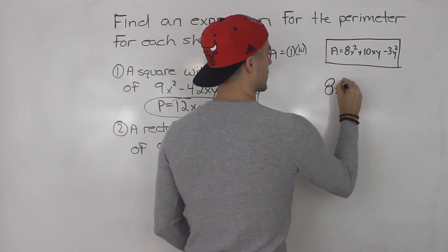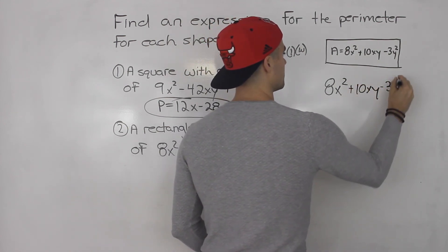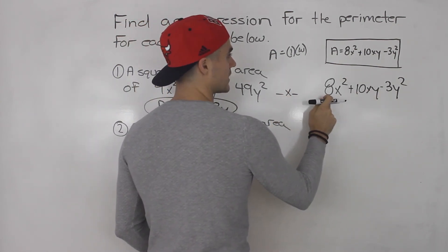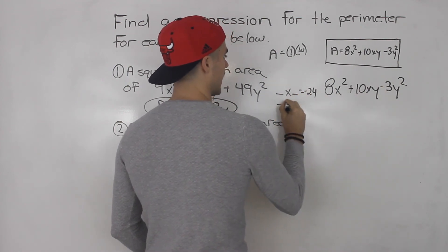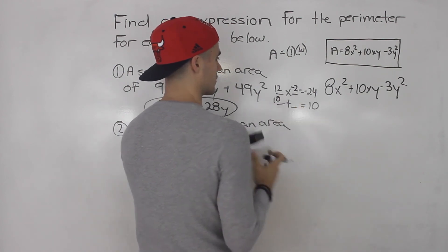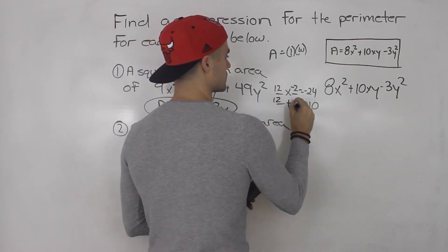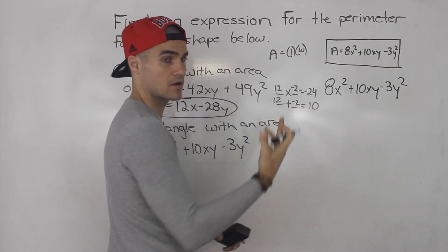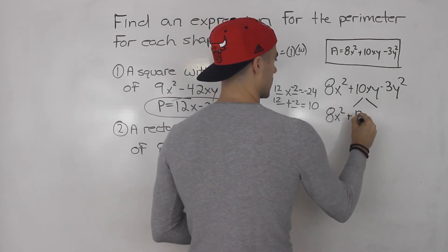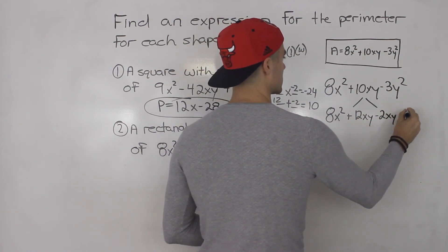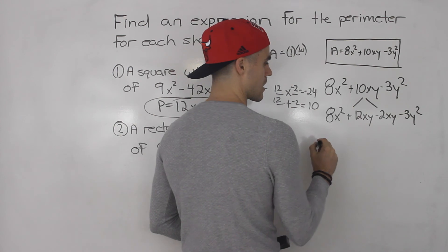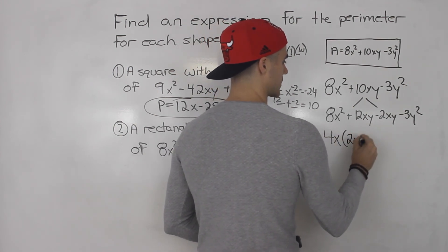Taking 8x squared plus 10xy minus 3y squared: what two numbers multiply to 8 times negative 3, which is negative 24, and add up to positive 10? That's 12 and negative 2, because 12 times negative 2 is negative 24 and 12 plus negative 2 is positive 10. By decomposition we get 8x squared plus 12xy minus 2xy minus 3y squared. From the first two terms we factor out 4x, leaving 2x plus 3y.